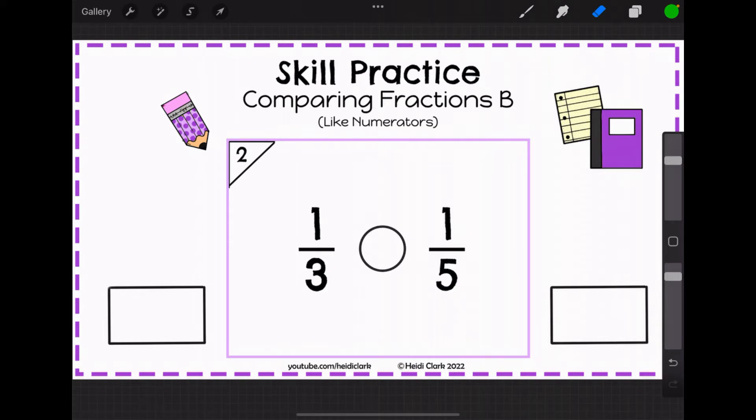The numerator is that top number, that's how many pieces you're going to get. So you're gonna get one piece on this side and one piece on that side. Either way you're taking one piece of the rectangle.